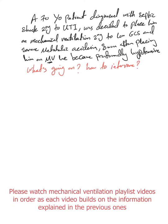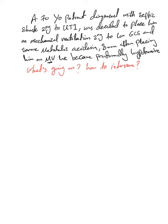After reviewing preload and afterload, let's have this clinical example. We have a 70-year-old male patient diagnosed with septic shock secondary to UTI. It was decided to place him on mechanical ventilation secondary to low GCS and severe metabolic acidosis. Soon after placing him on mechanical ventilation, he became profoundly hypotensive. So what's going on?